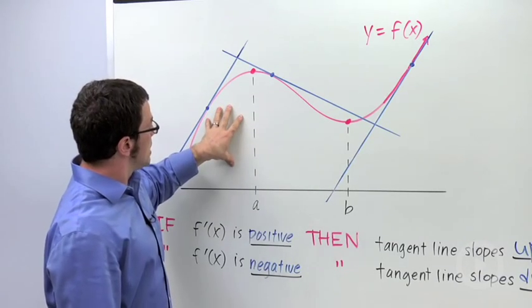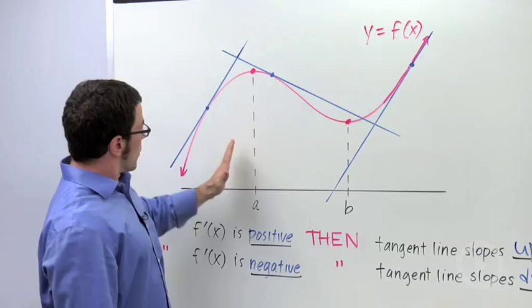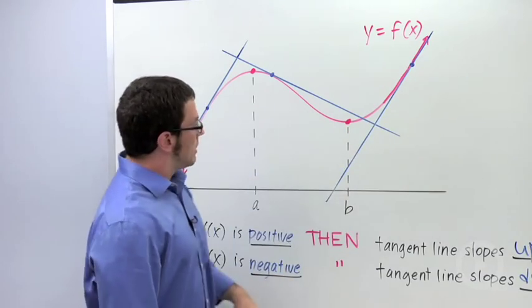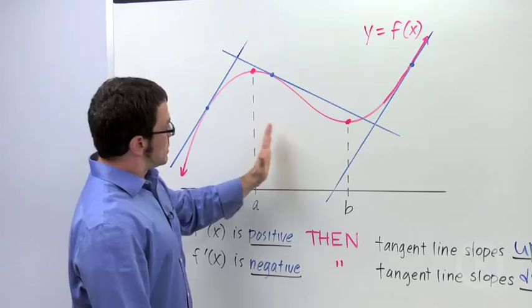So you can see that this function increases in two intervals, for x less than a, for x greater than b, and it decreases between a and b.